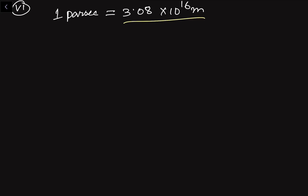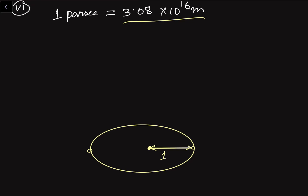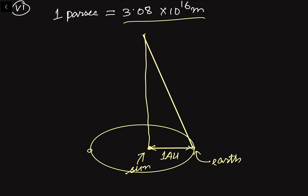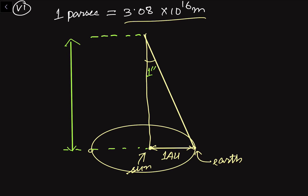Consider the Sun at the center with the Earth revolving around it in an elliptical orbit. Take the average distance from the Sun to the Earth — that is one astronomical unit. If we draw a perpendicular at that point and draw a line to the Earth such that the angle formed is equal to one arc second, then the distance from that point is called one parsec.